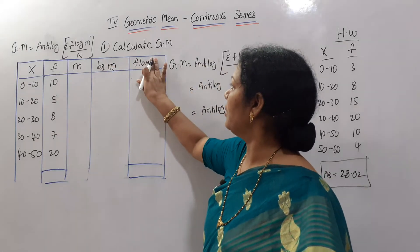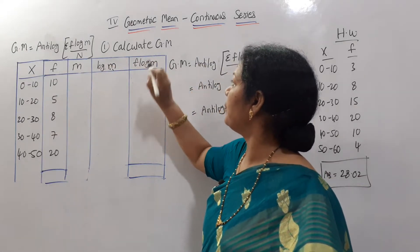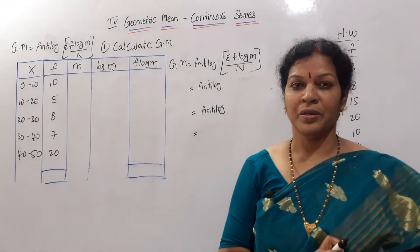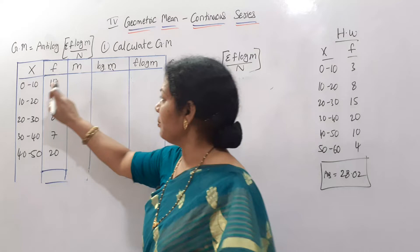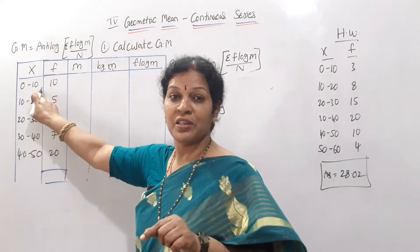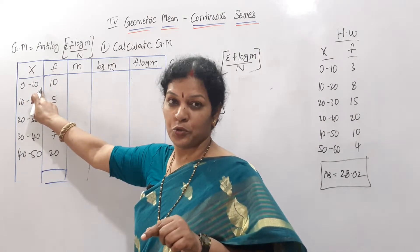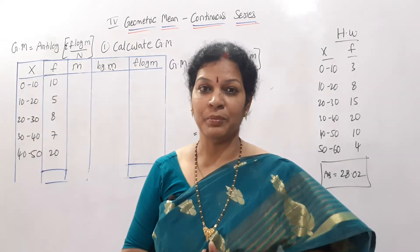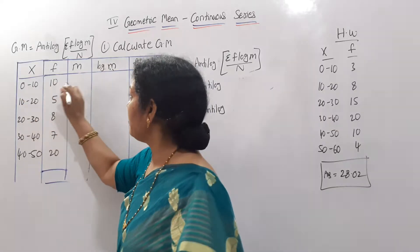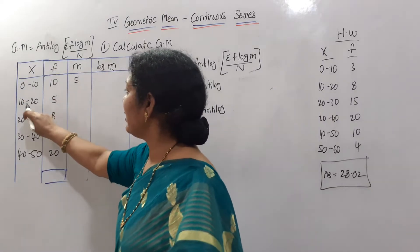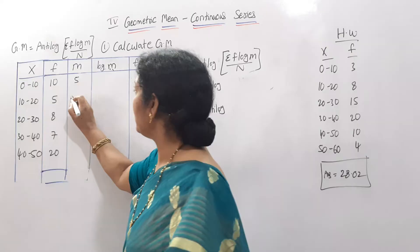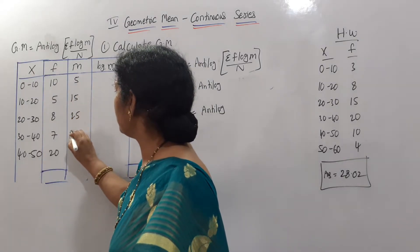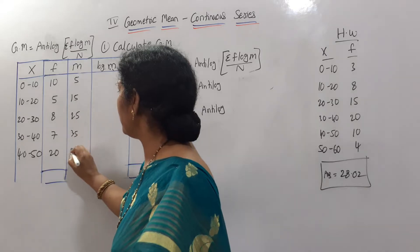Let us go for the mid value m. For 0 to 10: 0 plus 10 is 10, divided by 2 gives 5. For 10 to 20: total is 30, divided by 2 gives 15. In the same way, the mid values are 25, 35, and 45.